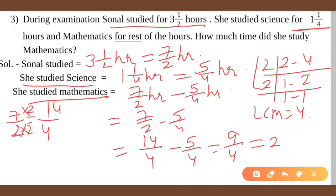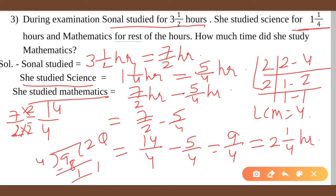Now we can also change 9 by 4 into a mixed number. We divide 9 by 4 — 4 twos are 8, and 9 minus 8 is 1. So quotient into remainder upon divisor gives us 2 and 1 by 4. So Sonal studied mathematics for 2 and 1 by 4 hours.